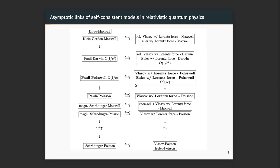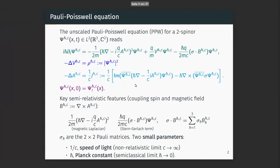I will be concentrating on the bold models here — the Pauli-Poisson system. This is a kind of intermediate between Poisson and Maxwell, as a one-over-c approximation, because the Maxwell equations are replaced by static Poisson equations — there are no time derivatives in the fields.